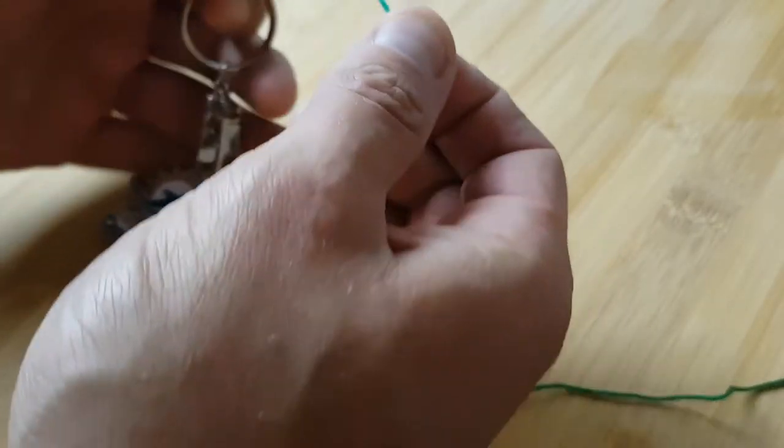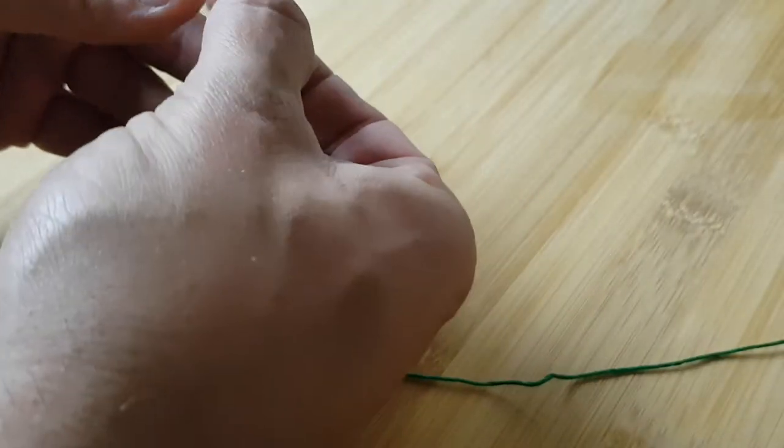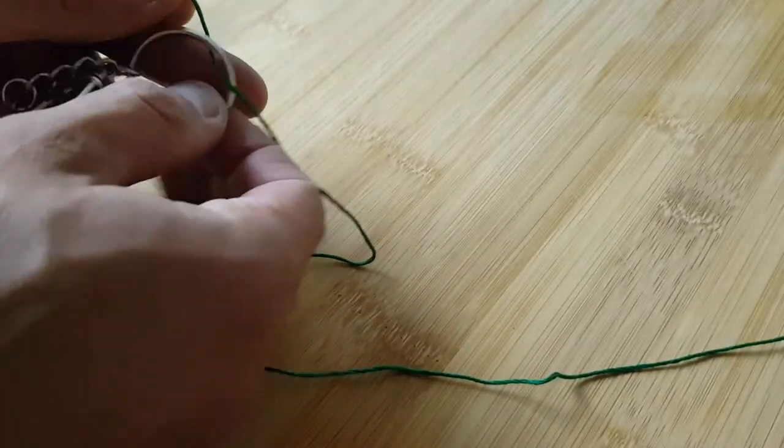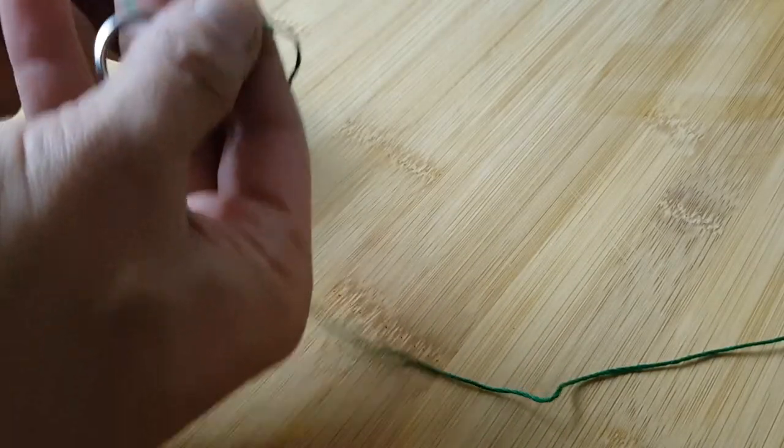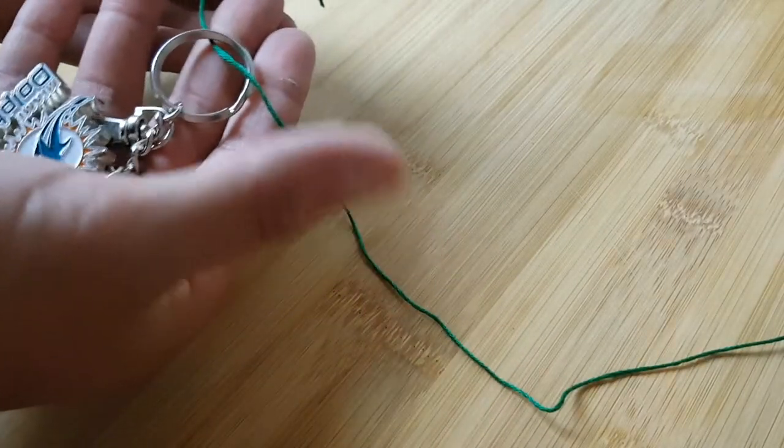Take your line through the eye. I like to hold what I'm tying, so usually the lure in my hand, and then make a knot.